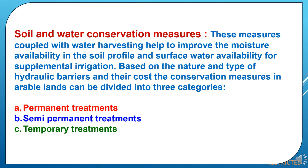Now to study soil and water conservation measures. These measures, coupled with water harvesting, help to improve moisture availability in the soil profile and surface water availability for supplemental irrigation. Based on the nature and type of hydraulic barriers and their cost, conservation measures in arable lands can be divided into three categories: first, permanent treatments; second, semi-permanent treatments; and third, temporary treatments.